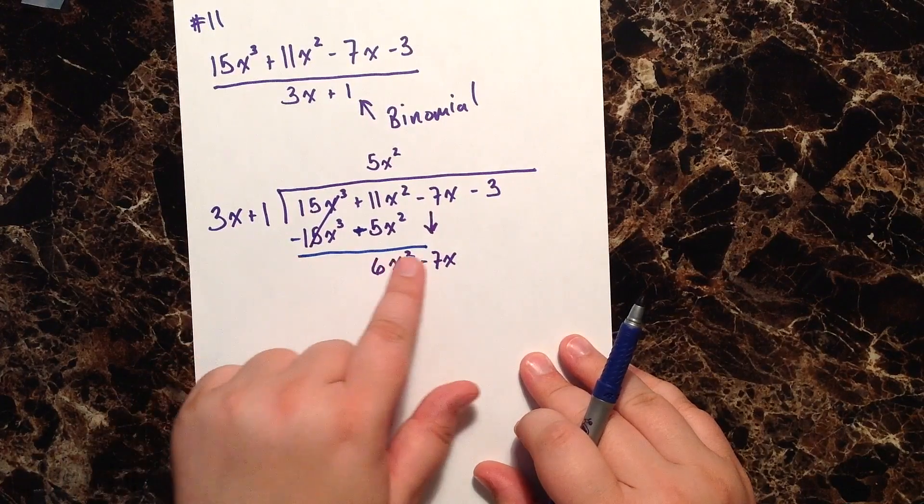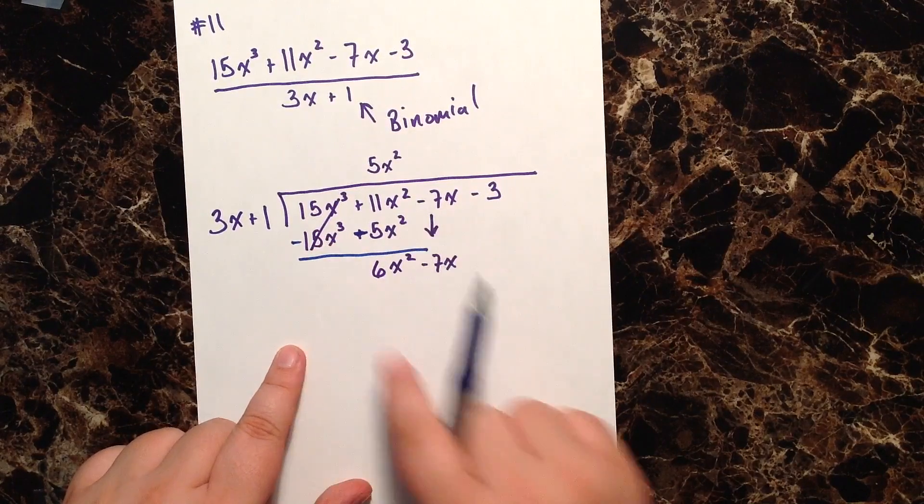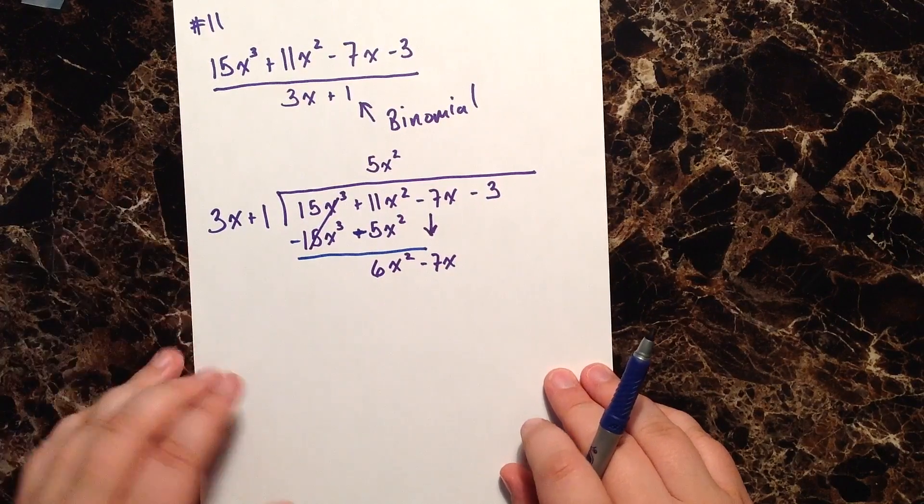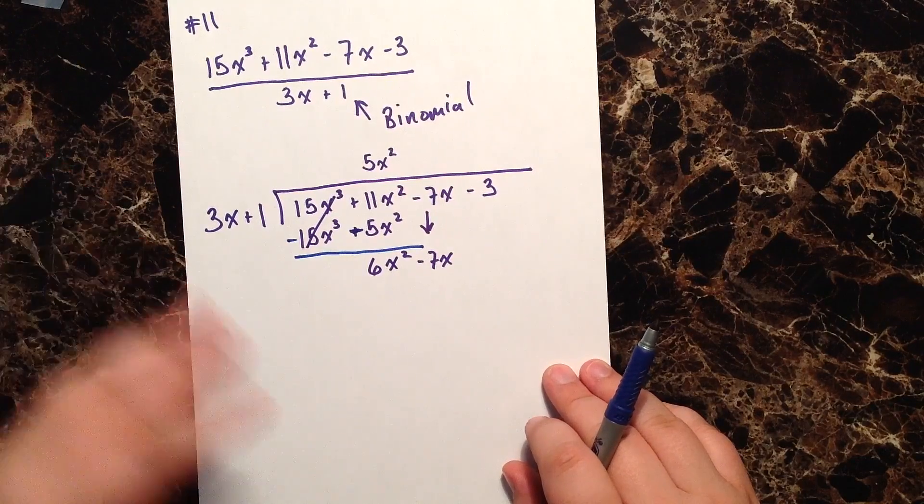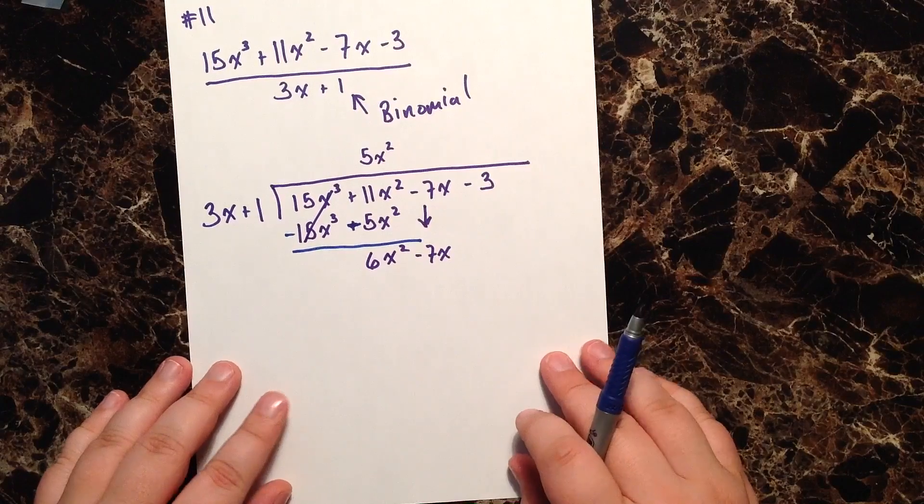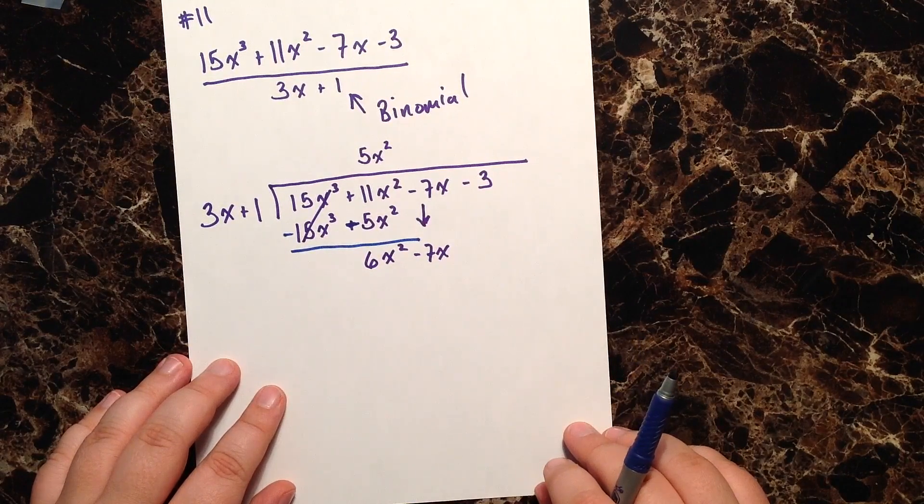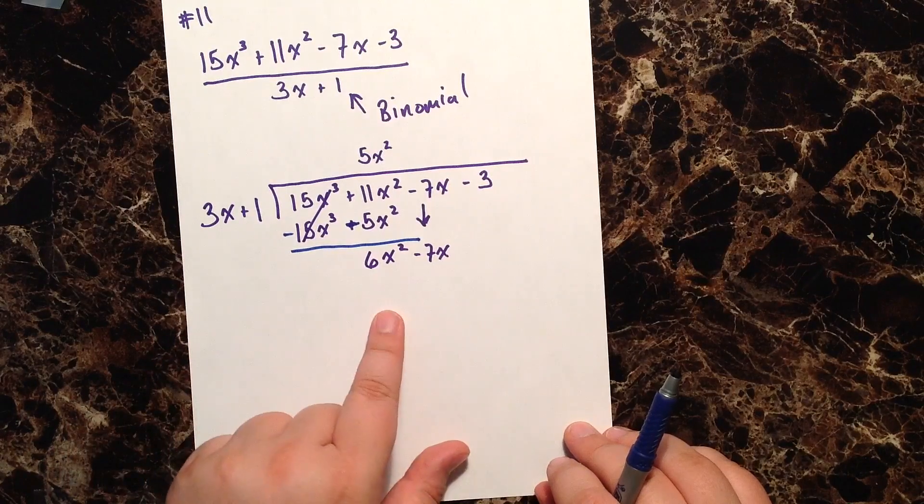And just keep in mind that when we draw our line and change our signs, if the first column here doesn't cancel out, you've done something wrong in the math. So you've got to go back and check yourself. And again you'll see that process play out again when we do it with our new binomial here, that this first column has to cancel out.